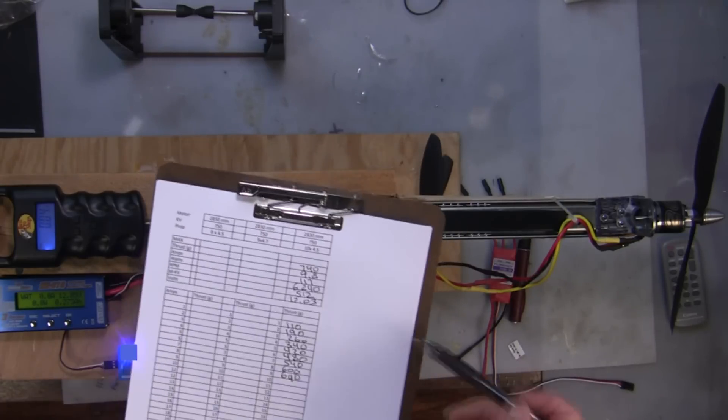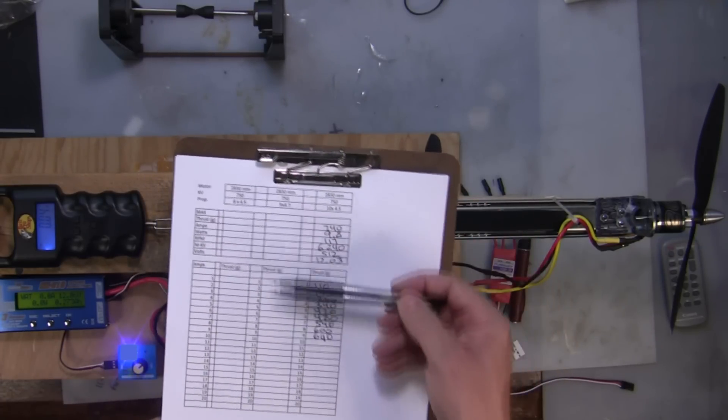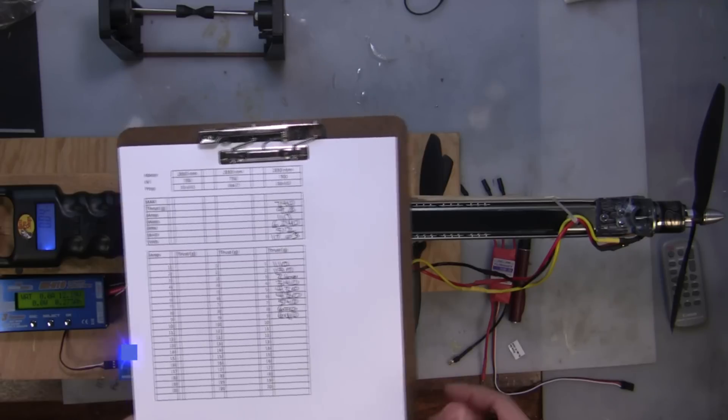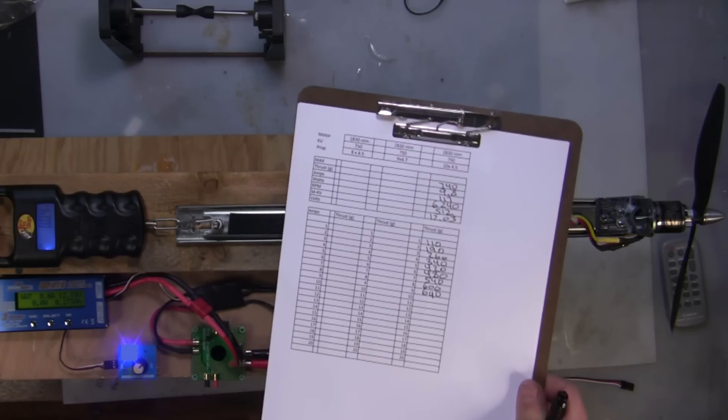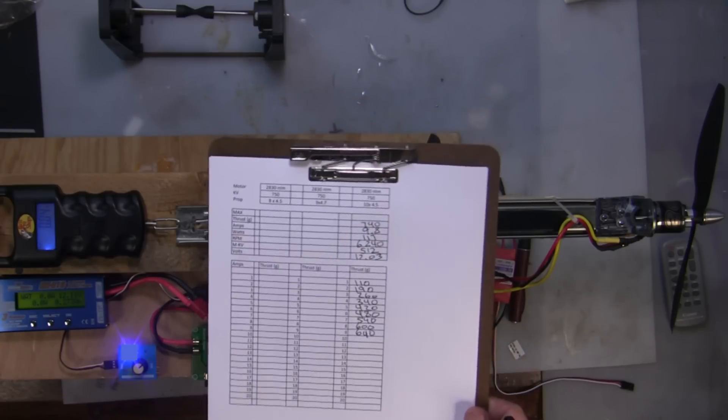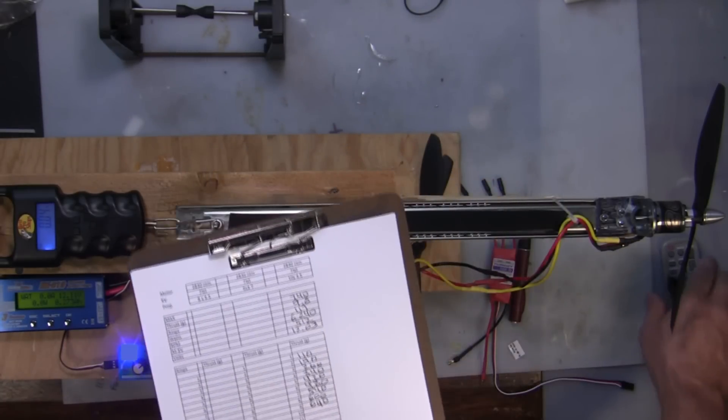And I'll just continue on and change my propellers and my motor combinations and keep filling out this information. And I'm going to chart it, which I'll show you on the computer how I charted and graphed the information that I compiled writing down the sheets, and I'll go over that next.